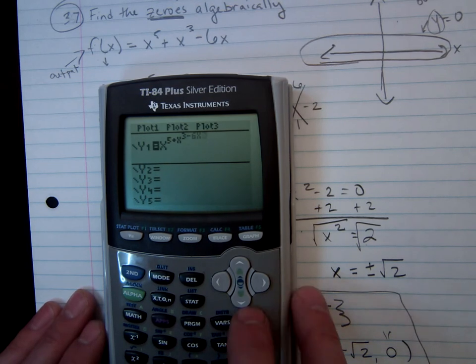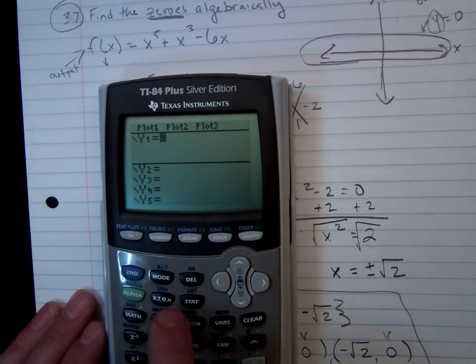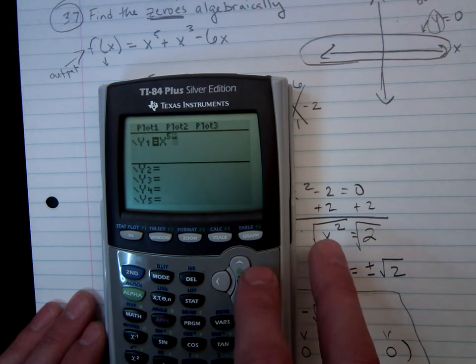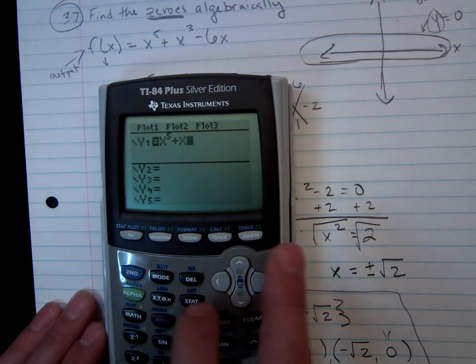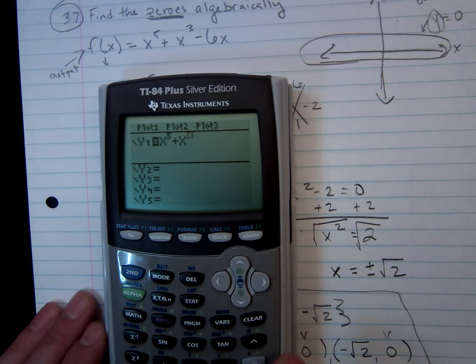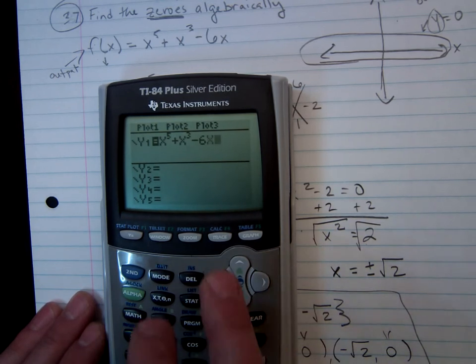I'd put in x to the fifth power plus x to the third power minus 6x. Oops, I did that wrong. Now, x to the fifth power plus x to the third power minus 6x. Graph it.